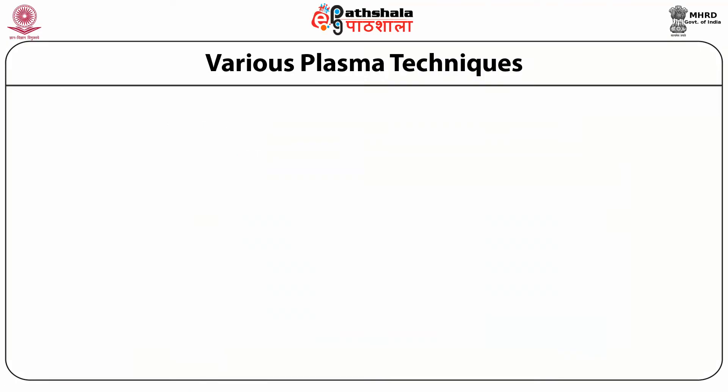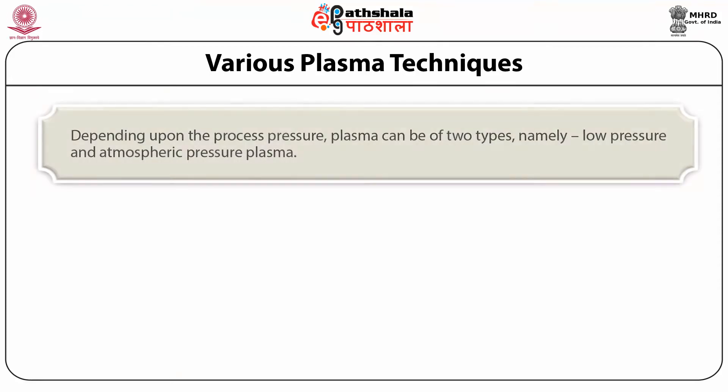Ionized implies the existence of one or more free electrons which are not associated with any atom or molecule. Plasma is electrically conducting and it strongly responds to electromagnetic fields due to the presence of free electronic charges. A plasma containing particles is termed as dusty plasma, and dusty plasma is associated with synthesis. Among the large variety of plasma-based nanoparticle electrical processes, electrical systems have attracted much interest. Plasma can be distinguished on the basis of numerous conditions. Depending upon process pressure, plasma can be of two types: low pressure and atmospheric pressure plasma.